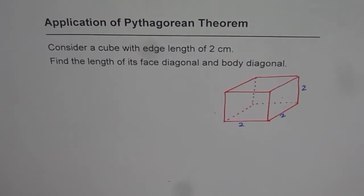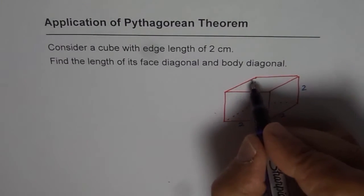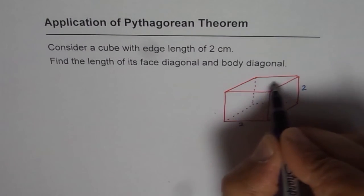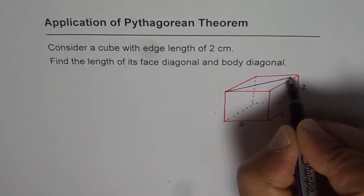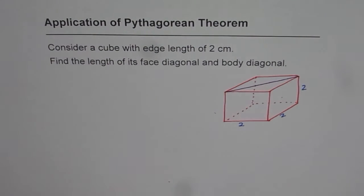Face diagonal really means that diagonal on any face. So that is a top face. So if I draw a line joining the two vertices on the opposite ends, then that becomes the face diagonal.